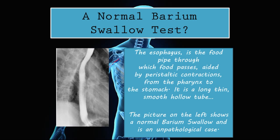Basically, the esophagus is like a garden hose through which food passes from the oral cavity down into the stomach — it's just a passage for food to pass through. This is typically what a normal barium swallow test looks like. Now let's get into some pathological cases.